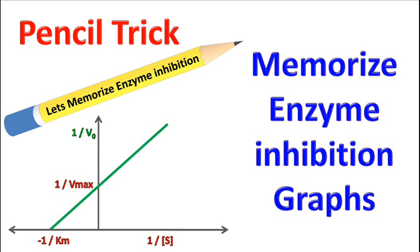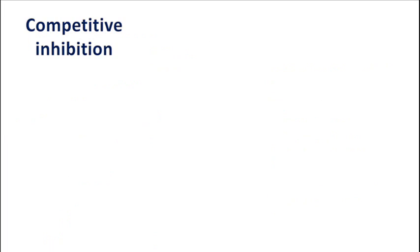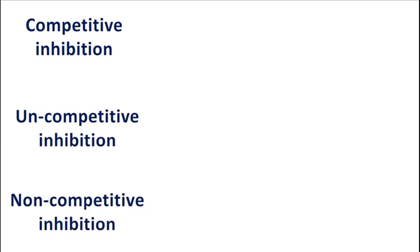Hey guys, quick biochemistry basics here. Let's talk about tips to remember enzyme inhibition. There are three types of enzyme inhibition: competitive inhibition, uncompetitive inhibition, and non-competitive inhibition.